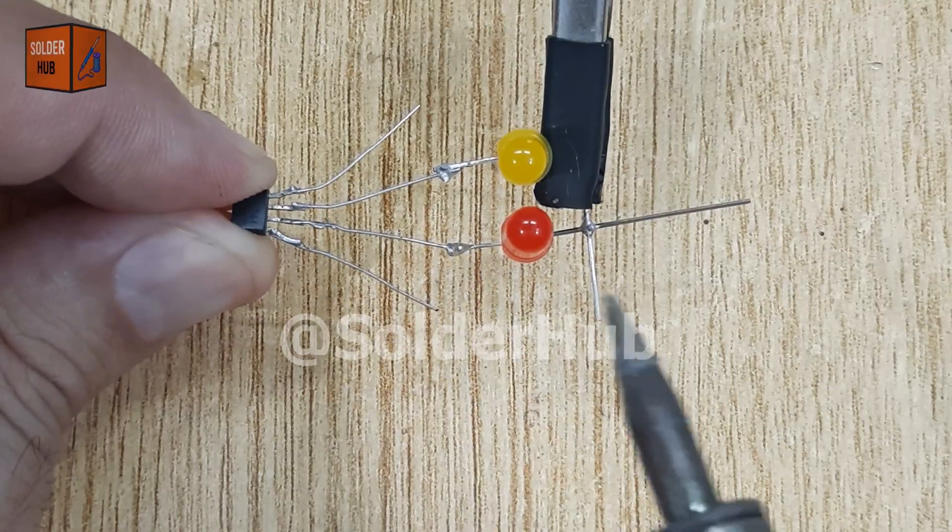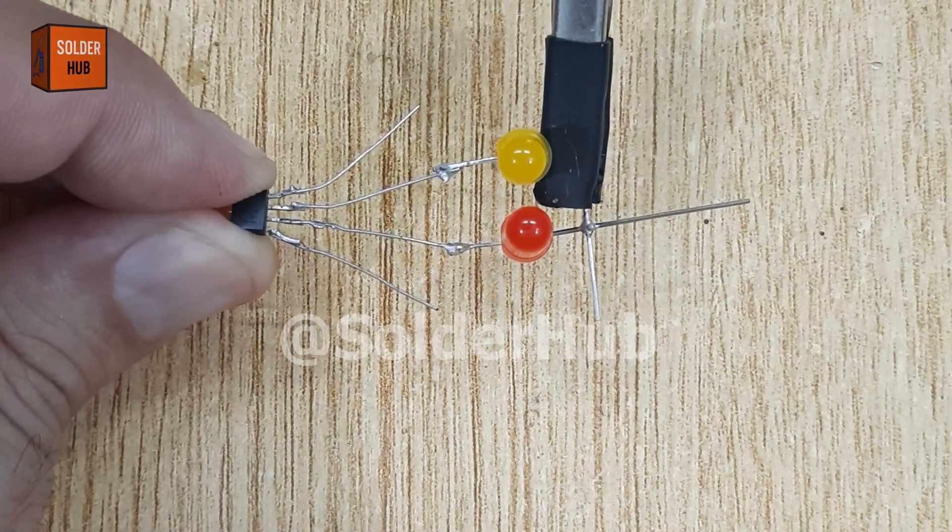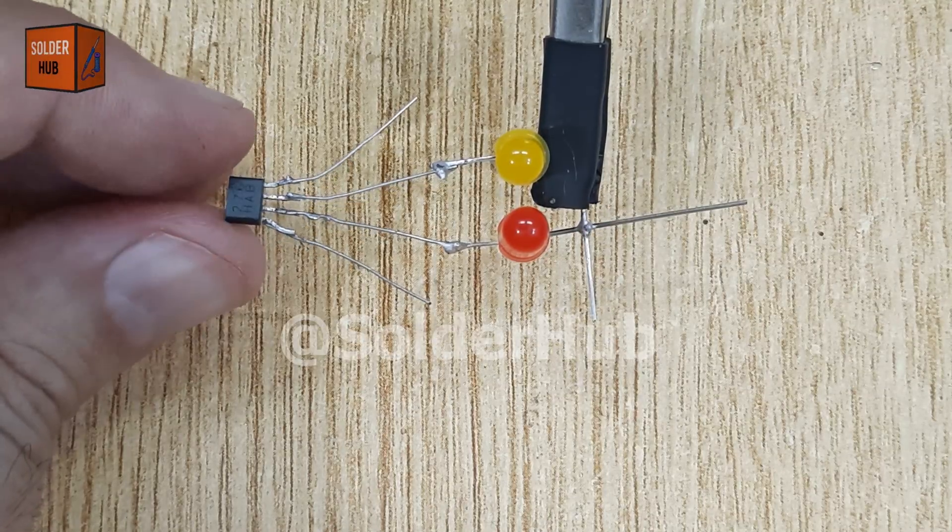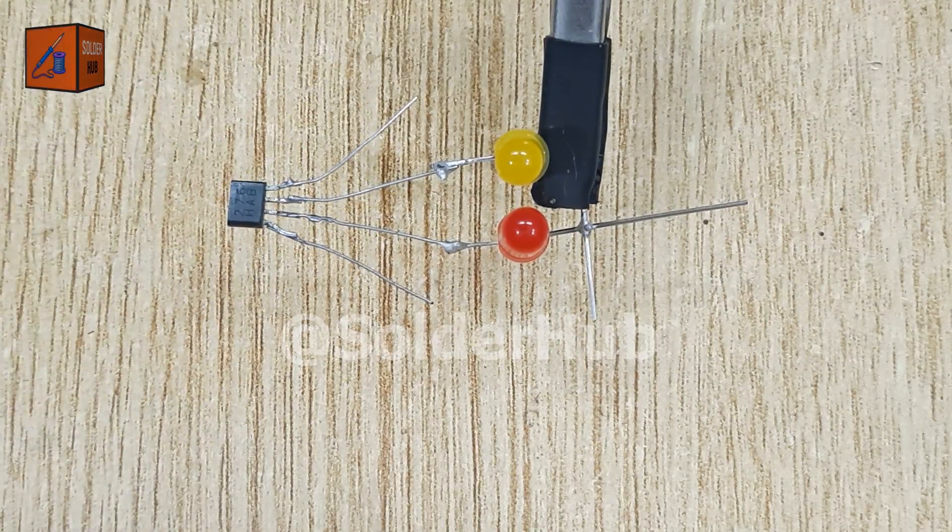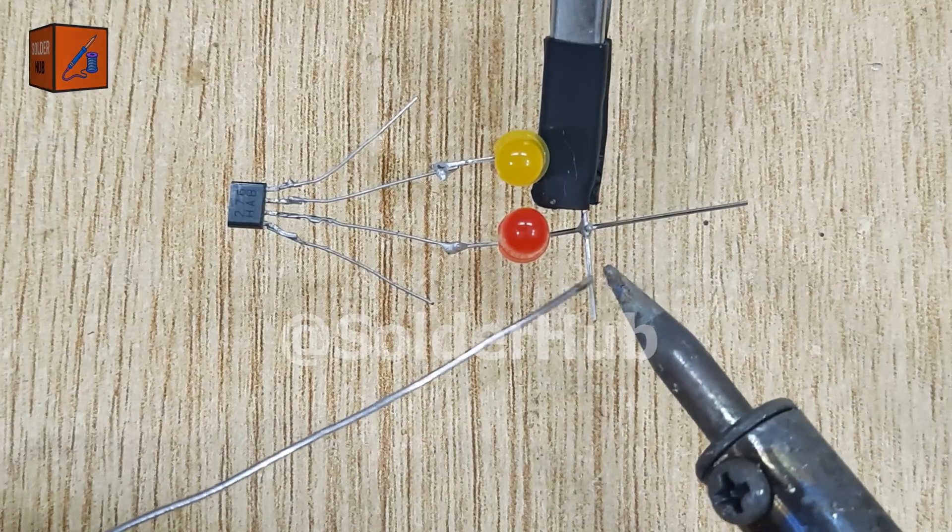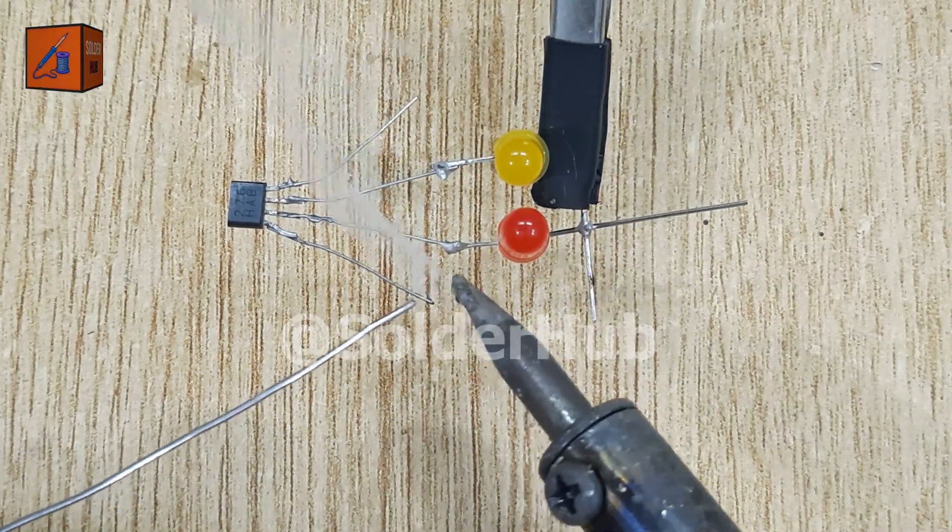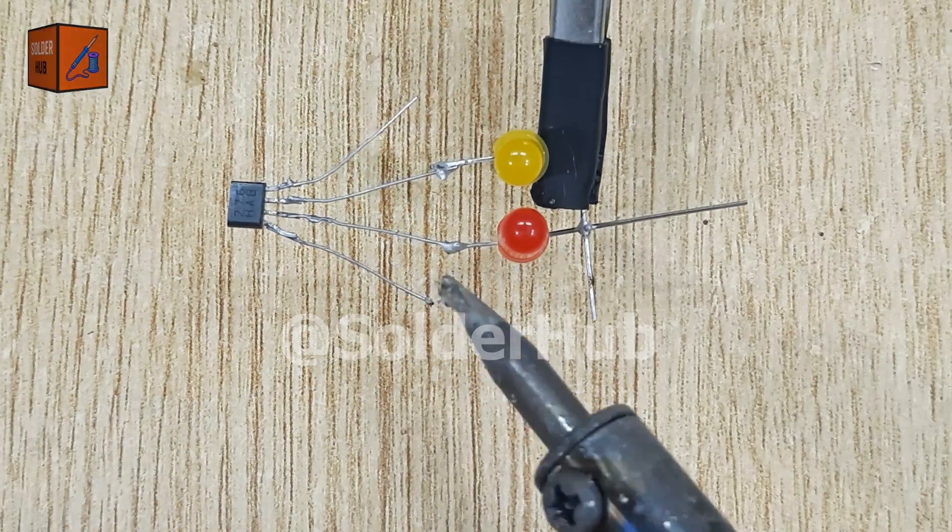I actually found this hall effect sensor in an old CPU fan. Many cooling fans in computers use hall sensors to detect rotation speed. Since the pins are very short and difficult to work with, I carefully soldered extension wires to each pin to make them longer and easier to connect in my project. This way the sensor is fully reusable instead of being wasted.